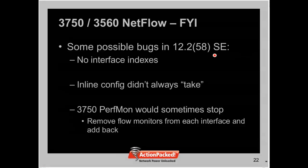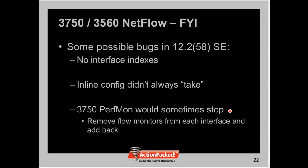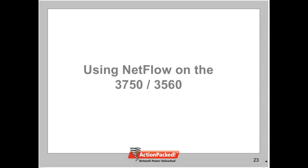We found some possible bugs in the code which we've reported to Cisco. There are no interface indexes coming back, and the inline config didn't always take — possibly a platform issue or a code bug. On our 3750, sometimes the performance monitoring statistics would stop and you'd have to remove and re-add the flow monitors on each interface. Hopefully these will get resolved in the next release. This technology is bleeding edge, so keep that in mind when experimenting with these new features.